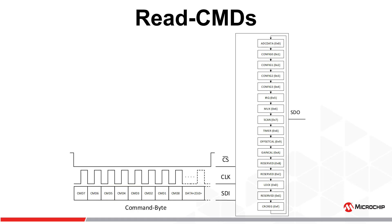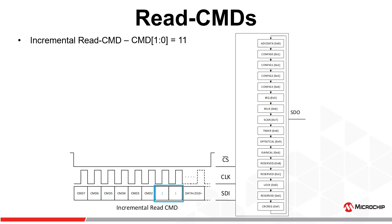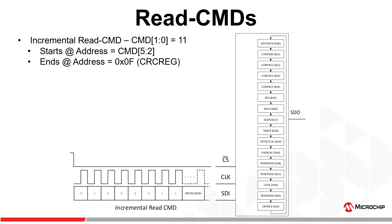The MCP-3X6X device also offers the ability to individually or sequentially read one or all registers using a set of read commands. By issuing a command with command byte bits 1-0 set to 11, the incremental read command will be executed, offering the ability to sequentially read multiple registers in a single communication sequence. The incremental read command automatically increments the register pointer after each register read so long as chip select remains asserted low. It begins at the register address defined by command byte bits 5-2 and ends with the last readable register, in this case the CRC reg register at address F.